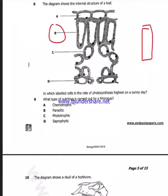Question 9: What type of nutrition is carried out by a Rhizopus? Now we know that Rhizopus is a type of organism that carries out saprophytic type of nutrition.